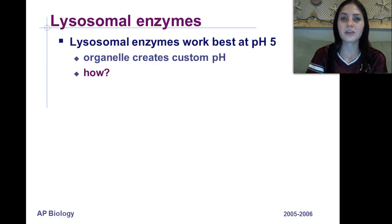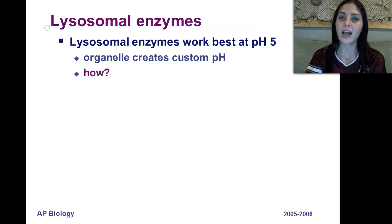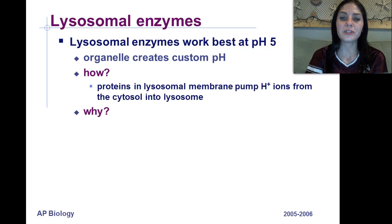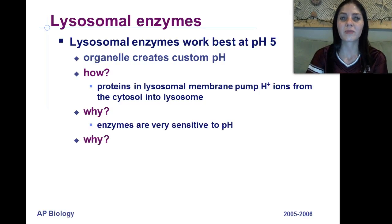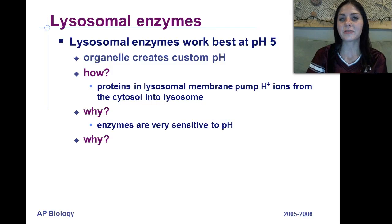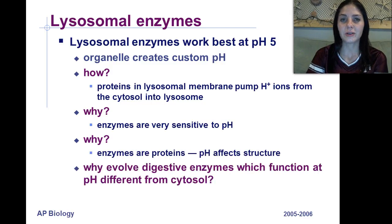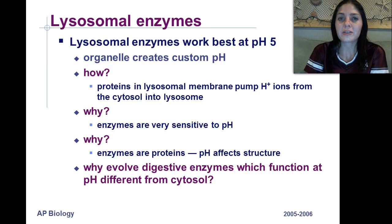Lysosomal enzymes work best at a pH of 5. The organelle actually creates its own custom pH by using proteins in the lysosomal membrane to pump hydrogen ions from the cytosol into the lysosome. This matters because enzymes are proteins, and proteins are sensitive to pH.